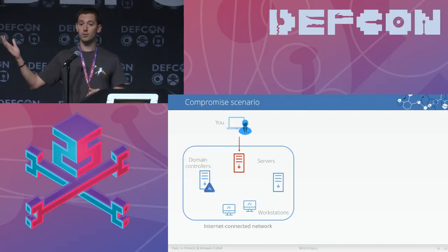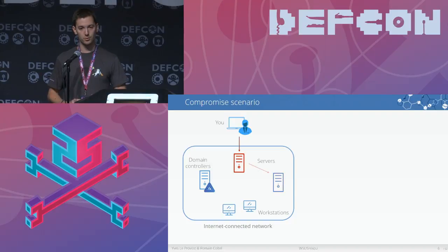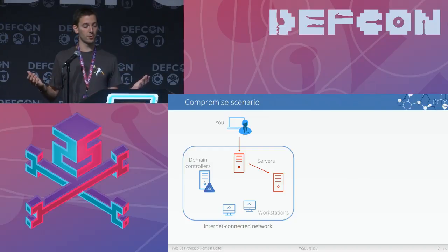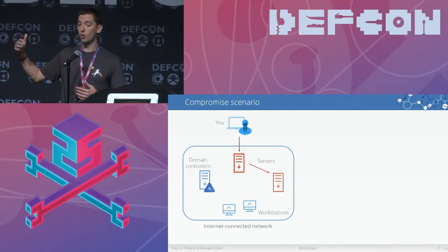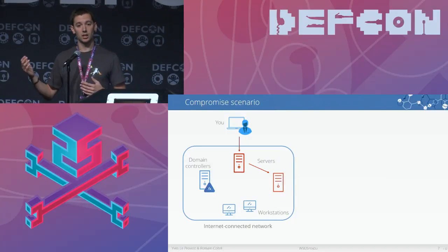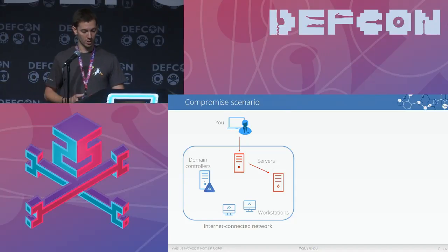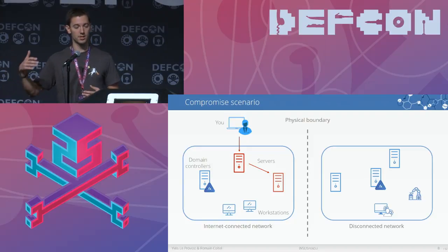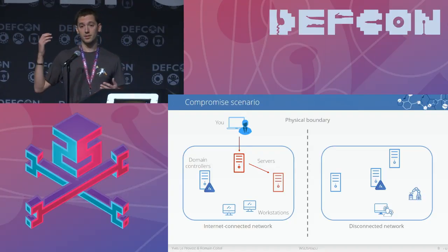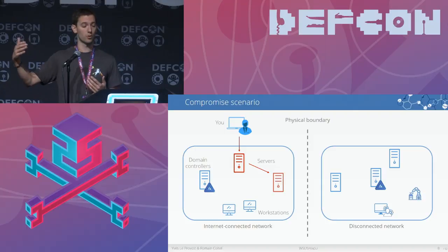So you pilfer the credentials on this server and manage to do some lateral movements. At some point you realize that everything is blocked — you can't go further in the network. But by looking at the data you've gathered on the servers, you realize there's another network, a disconnected one, next to the one you're trying to compromise. The problem is you don't have any more credentials to get further into the network. You're basically screwed.